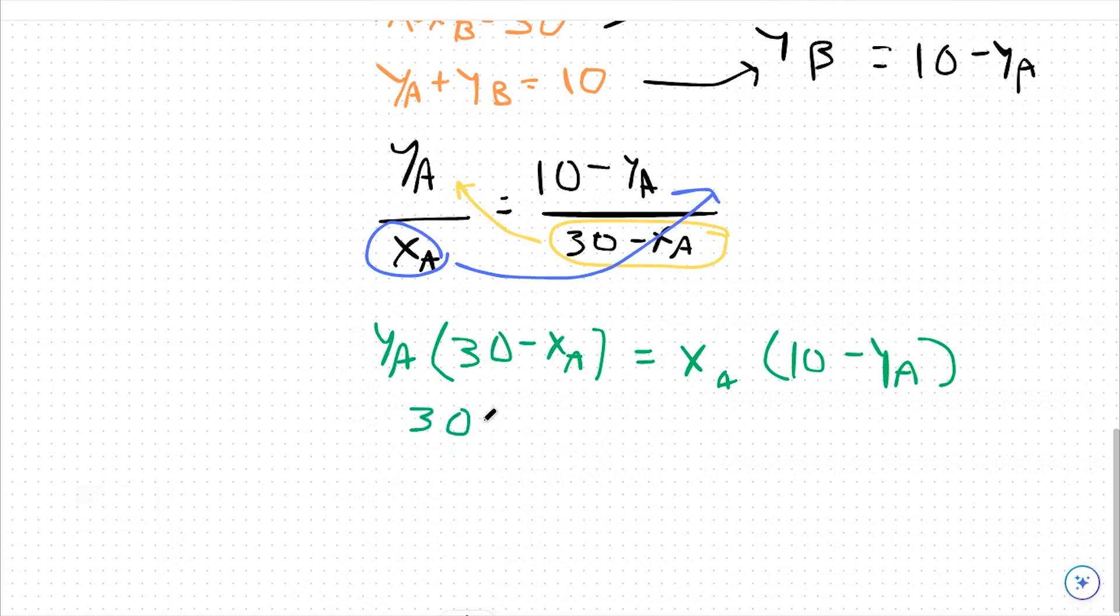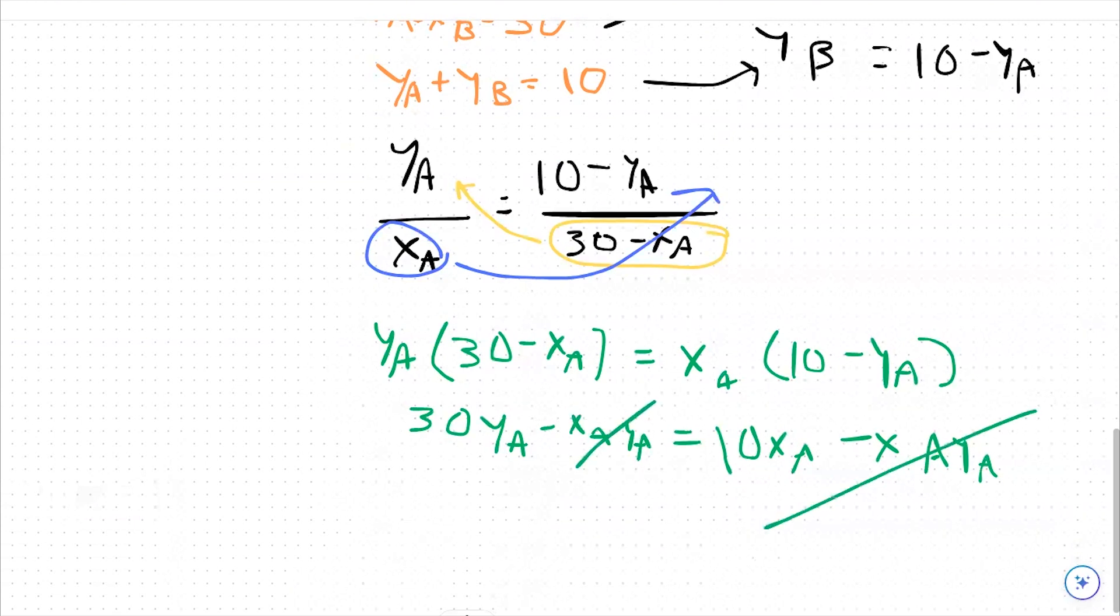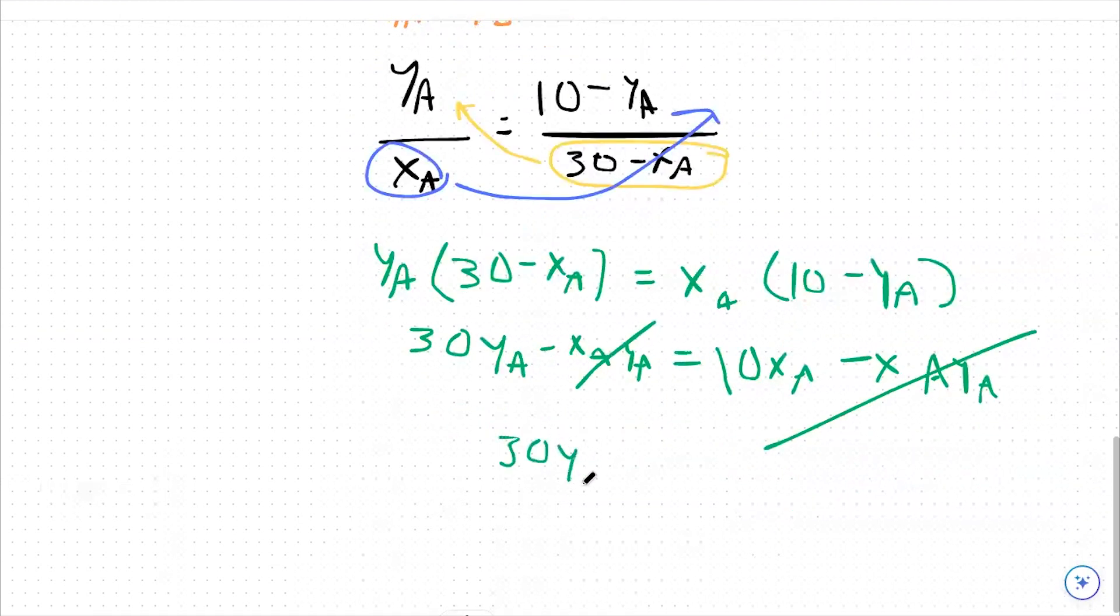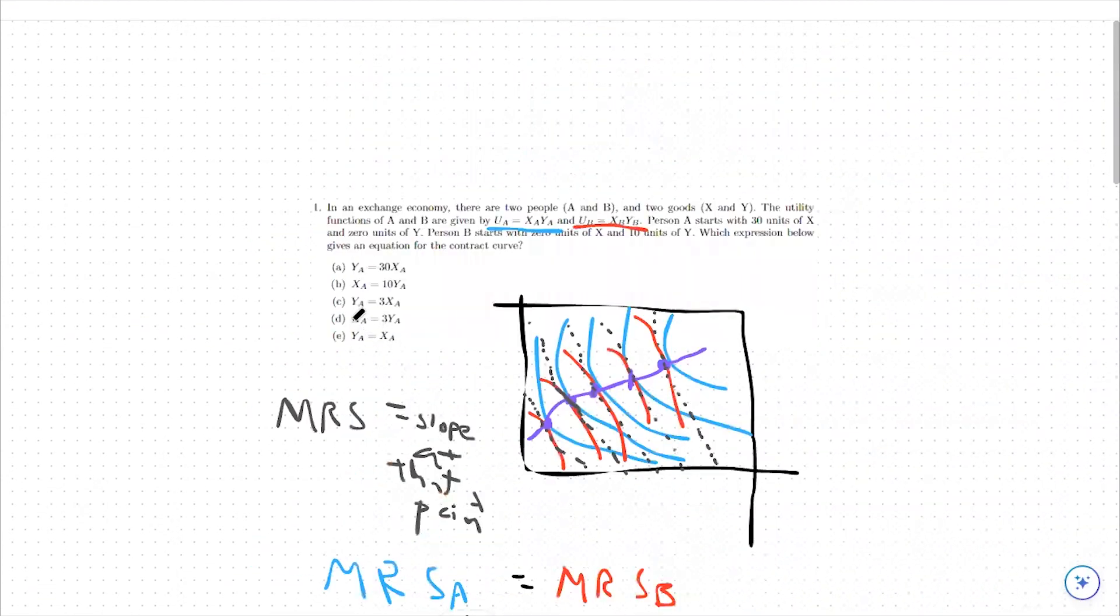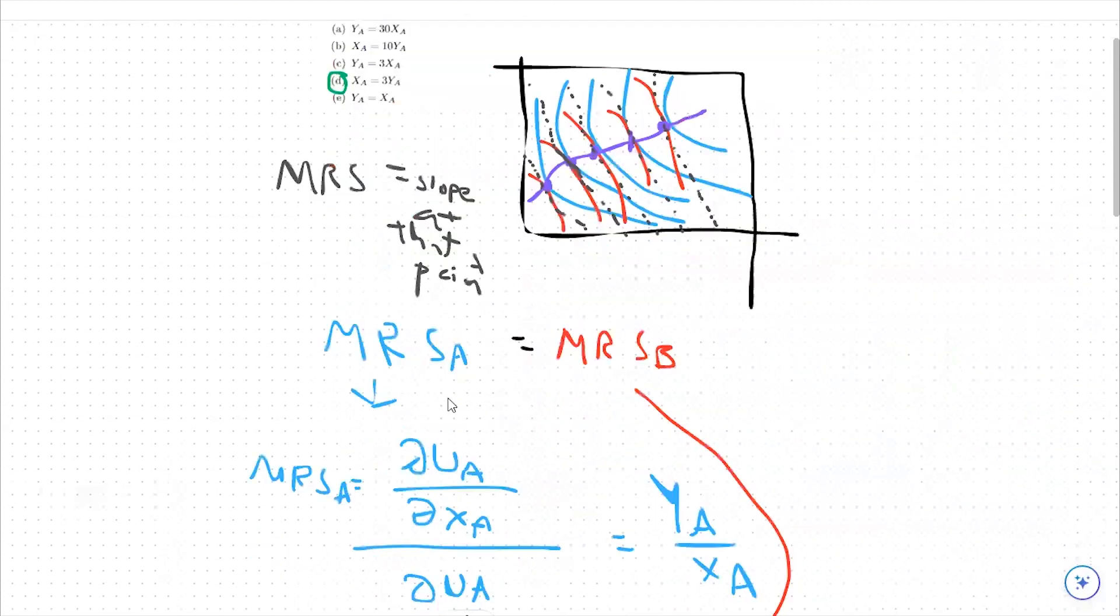Let's distribute out this YA first: 30YA minus XAYA. That's going to be our left side of the equation. I'm going to distribute out this XA: 10XA minus XAYA. I'm left with something that looks a little better. If I add XAYA to both sides, then these cancel out. So I'm left with 30YA equals 10XA. Then from there, I can divide by 10 on both sides and say 3YA equals XA. That is my contract curve. So that's going to be option D. XA equals 3YA.